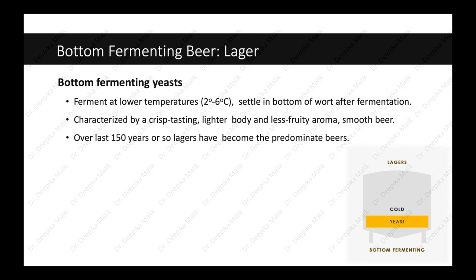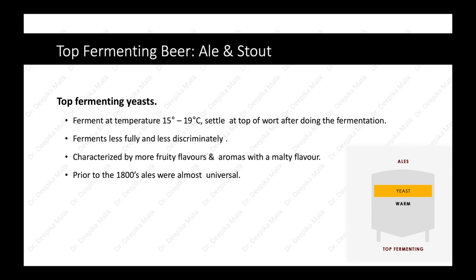Over the last 150 years or so, lagers have become the predominant beers. Coming to top fermenting beers like ale and stout — stout is also a form of ale. They are produced by top fermenting yeast and ferment at a temperature of 15 to 19 degrees Celsius, settling at the top of the wort after fermentation. As you can see in the diagram, they ferment less fully and less discriminately, and are characterized by more fruity flavors and aromas with a malty, full-bodied flavor.